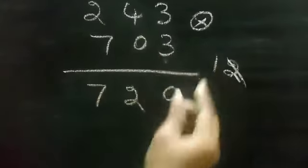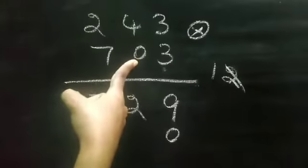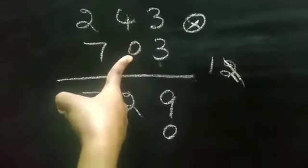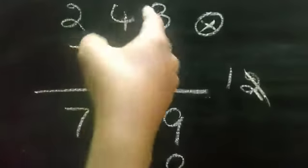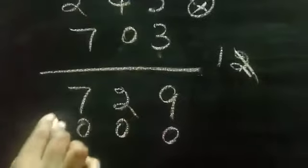See 1s place we finished. So we just put 0. Next we want to multiply by 0. So any number multiplied by 0, the answer will be 0. You know. So 0 times 3 is 0. 0 times 4 is 0. 0 times 2 is 0.